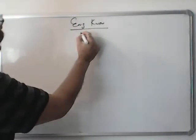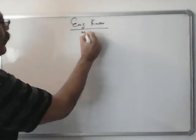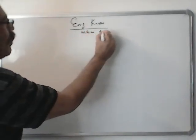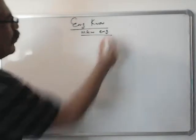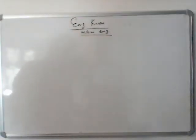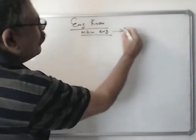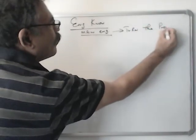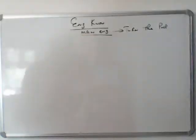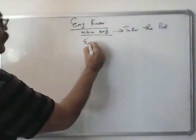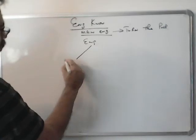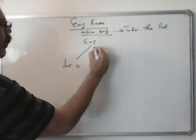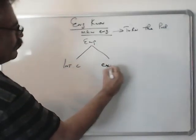First we will do main engine. The purpose of main engine is to turn the propeller. So basically there are two types of engines.